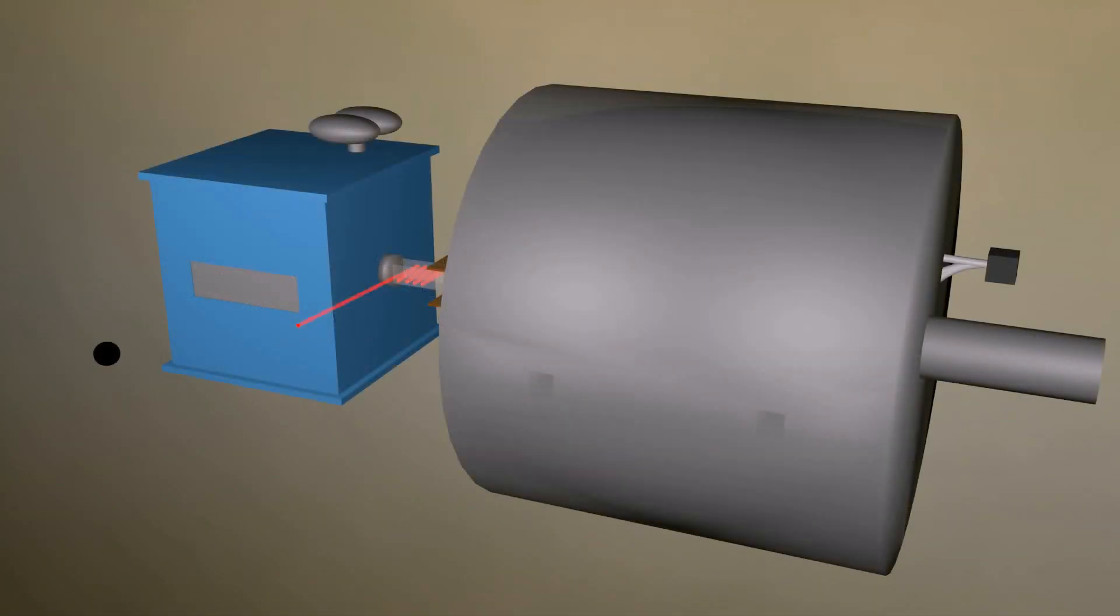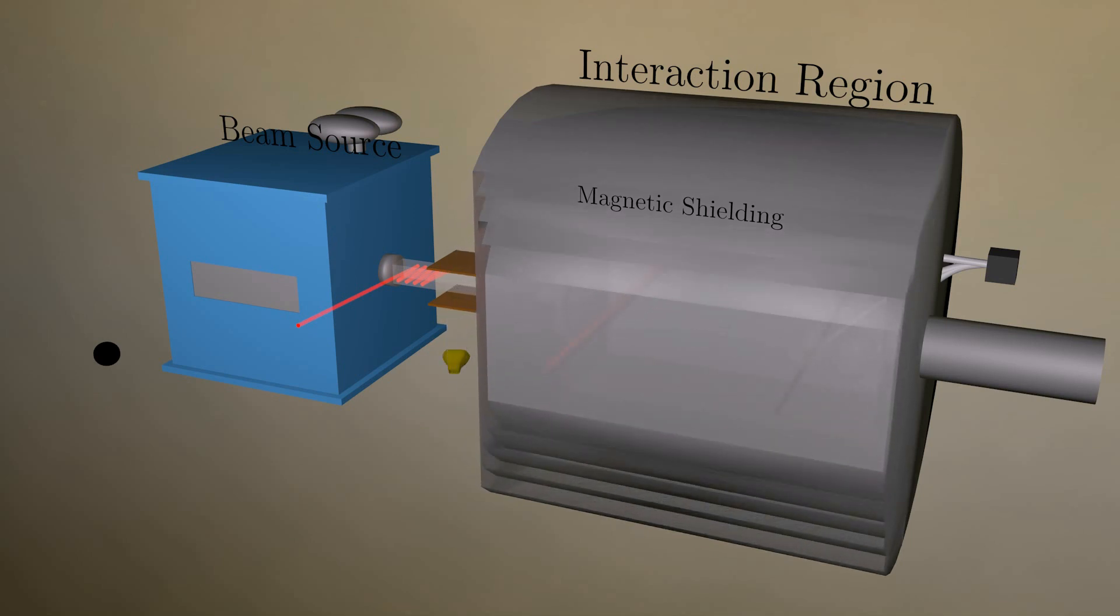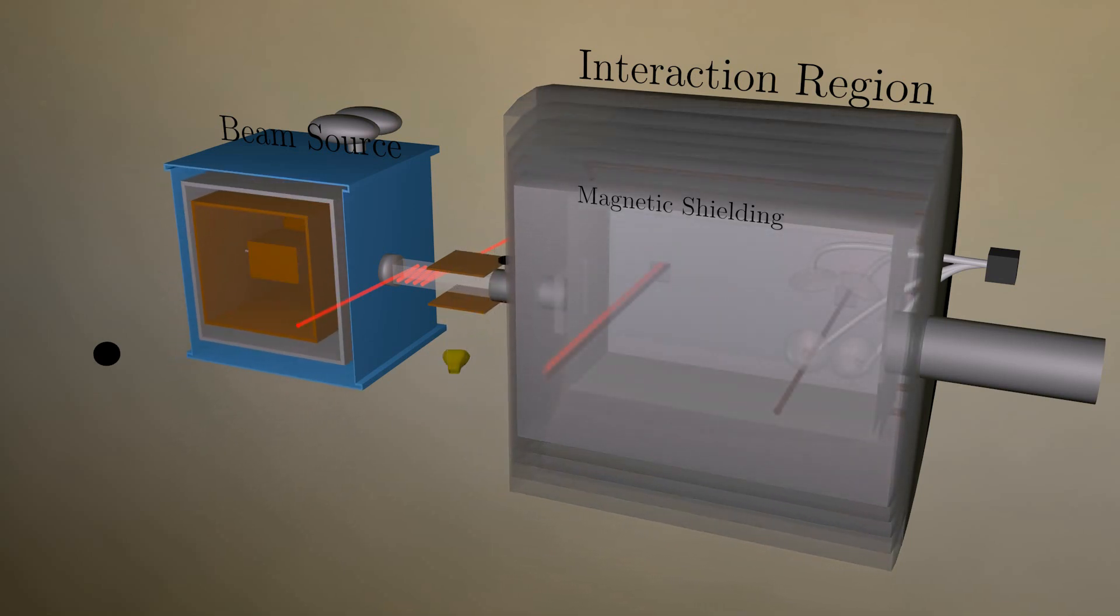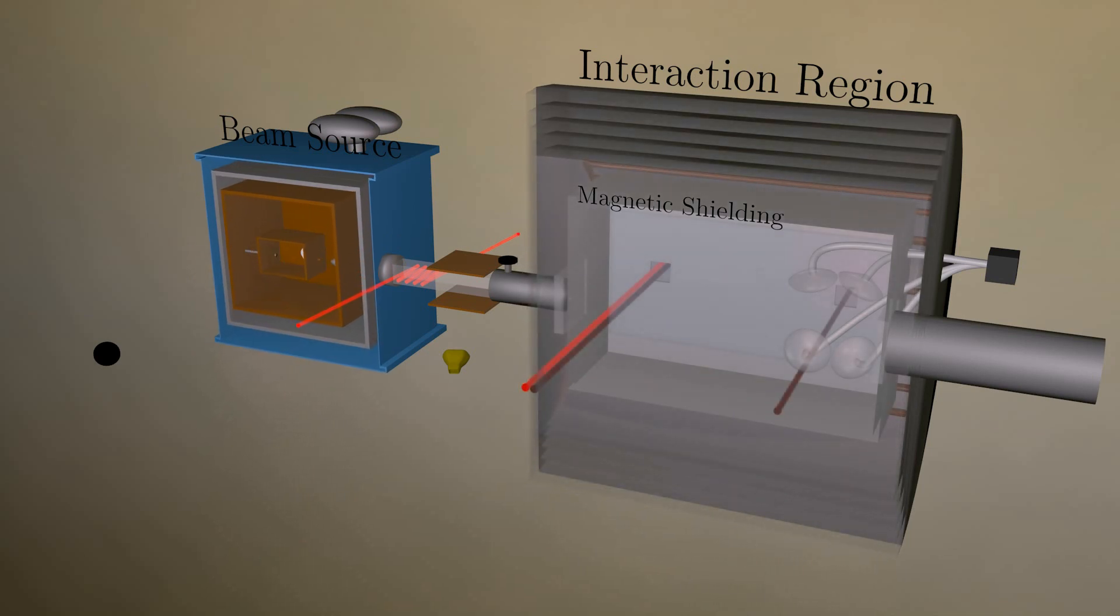This is an illustration of how the important components of the ACME experiment work. The apparatus is made up of two main components. On the left is the molecule beam source, and on the right is the interaction region where precise electric and magnetic fields are applied and the EDM measurement is performed.